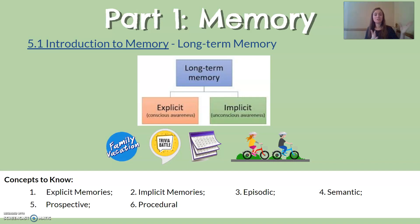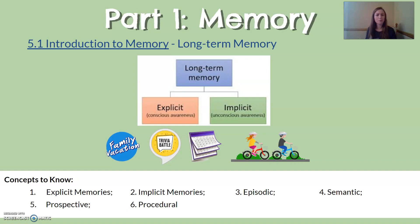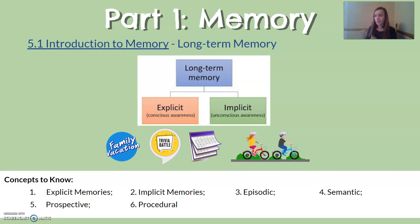We have implicit memories as well — these are memories you're not necessarily aware you're making or retrieving. One type is a procedural memory: memories for how to do something. We are always calling on procedural memories for all kinds of things in our life without thinking about it. Like brushing your teeth — you're pulling out a memory of how to do that. Or driving your car, riding a bike — you've kept that memory but might not necessarily be aware you're retrieving it as you use it.